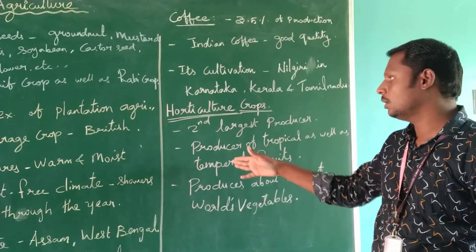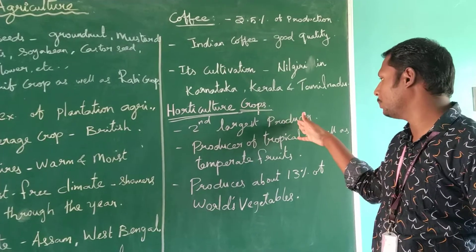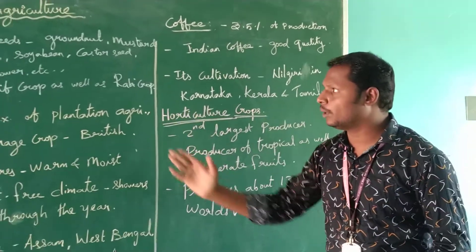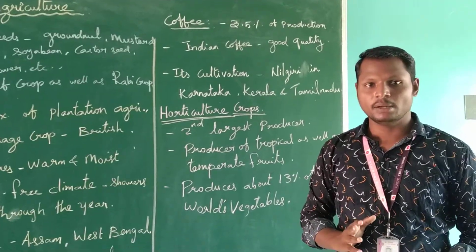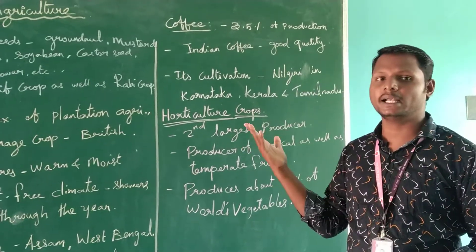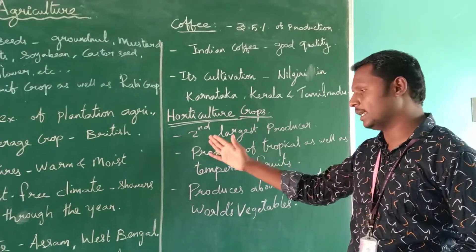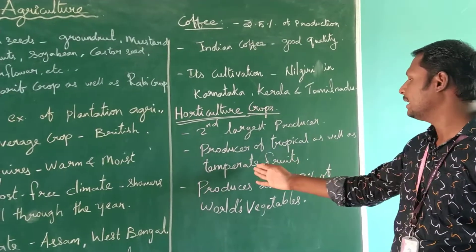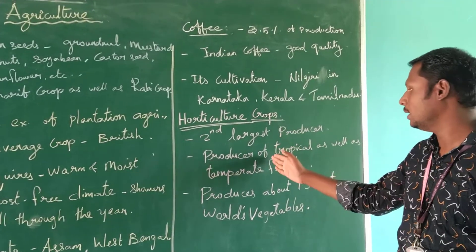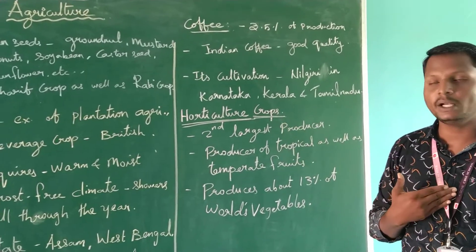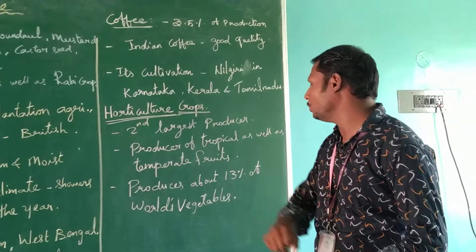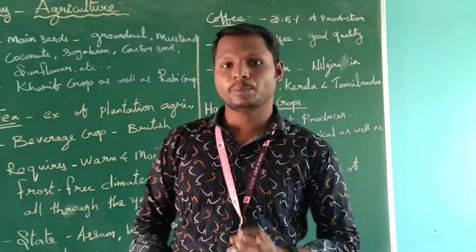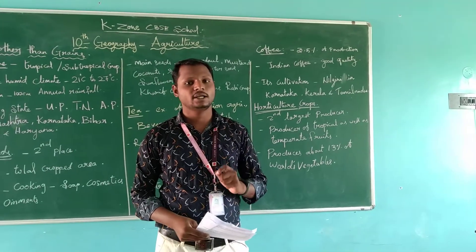The last topic is horticulture crops. India is the second largest producer of horticulture fruits after China. We produce both tropical and temperate fruits. India produces about 13 percent of the world's vegetables. China holds first place in most categories, but India holds second and third positions.